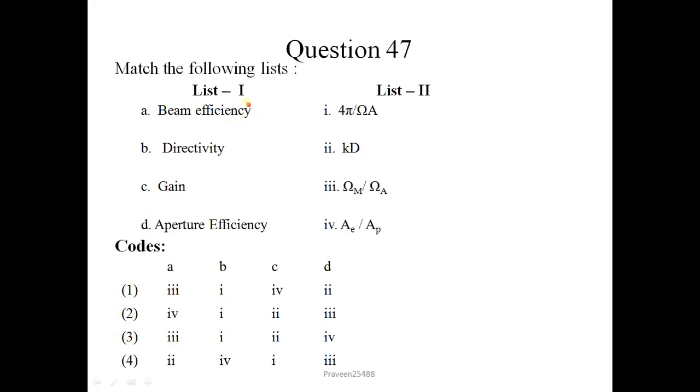Next question is: Match the following list. Beam efficiency - these are for antennas. The directivity is given as 4 pi by Omega A. Gain is given as K into D. And the partial efficiency is given as AE upon AP. Correct option is 3: 3, 1, 2, 4.